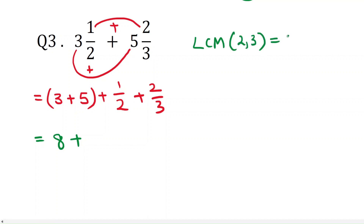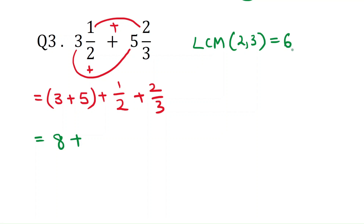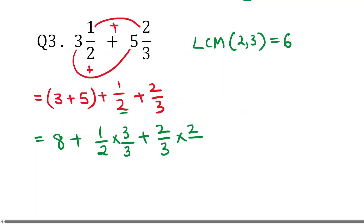We need to make the common denominator 6. To make 1/2 have denominator 6, multiply numerator and denominator by 3 — that gives denominator 6. For 2/3, multiply numerator and denominator by 2 — that also gives denominator 6.